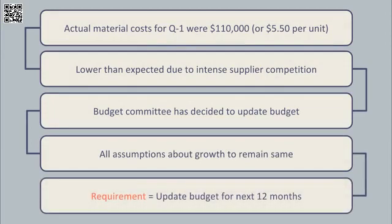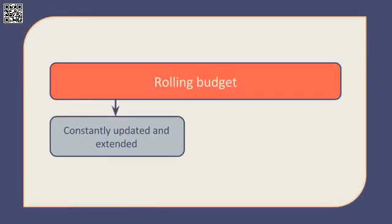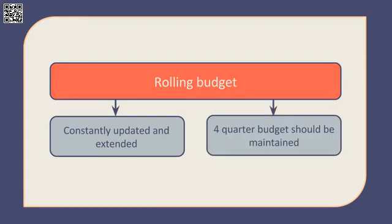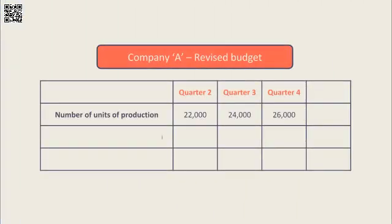The requirement is to update the budget for the next 12 months. A rolling budget should be constantly updated and extended by adding another accounting period, hence a four quarter budget should be maintained. A budget should be redrafted for Q2 to Q5 reflecting the fall in budgeted material cost from $6 per unit to $5.50 per unit. The quarterly increase of 2,000 production units should be maintained and applied to Q5, giving expected units of production of 28,000 in Q5.